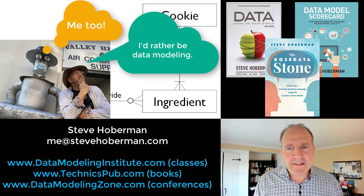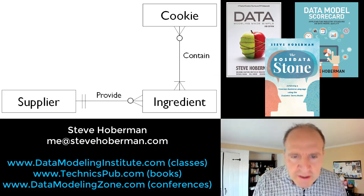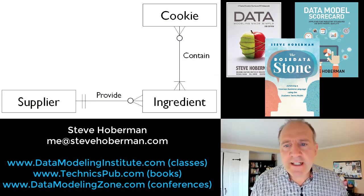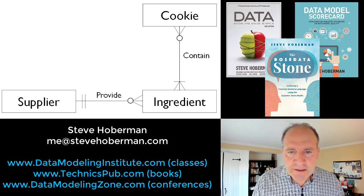Okay, let's go. Here we have three entities: cookie, ingredient, and supplier, and two relationships.